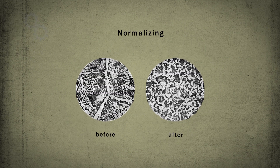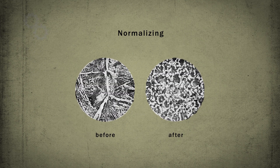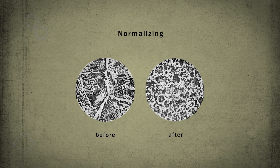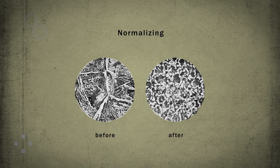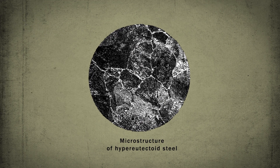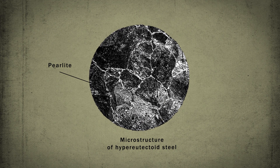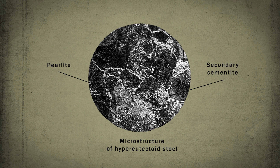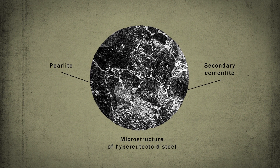Normalizing is used to correct the coarse-grained structure of steel, improve machinability by cutting, and structure before quenching. Normalizing of hypereutectoid steels eliminates the secondary cementite network along the pearlite grain boundaries.